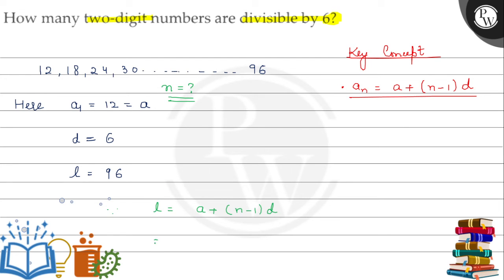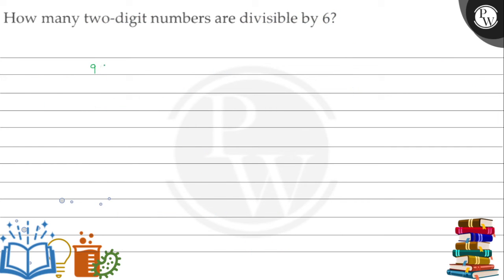Now solving this: 96 minus 12 equals (n-1) times 6. If we solve this further, 96 minus 12 equals 84, so 84 equals 6 times (n-1).